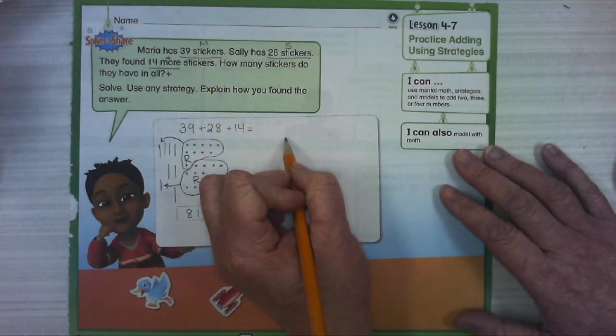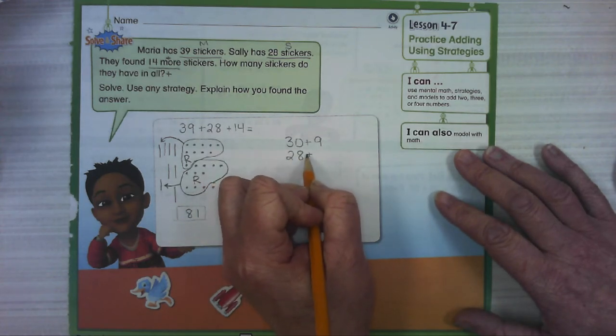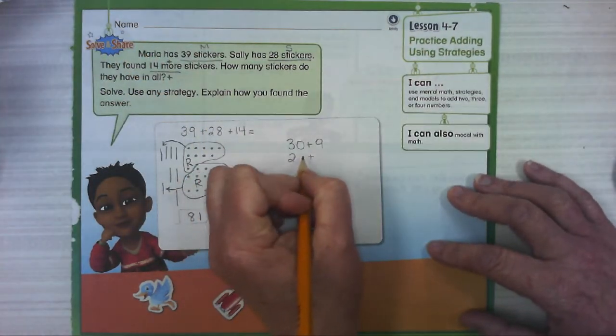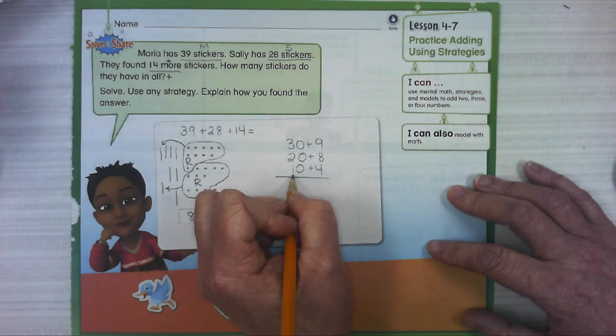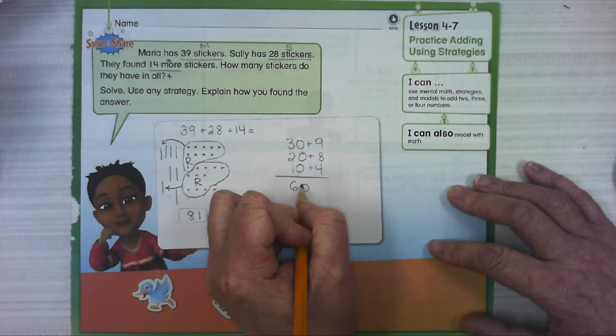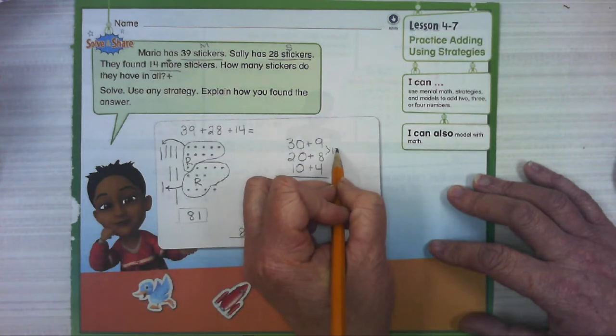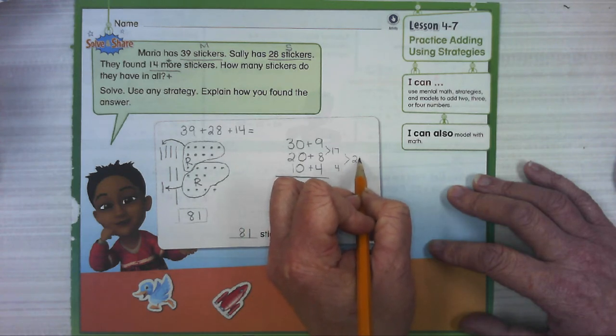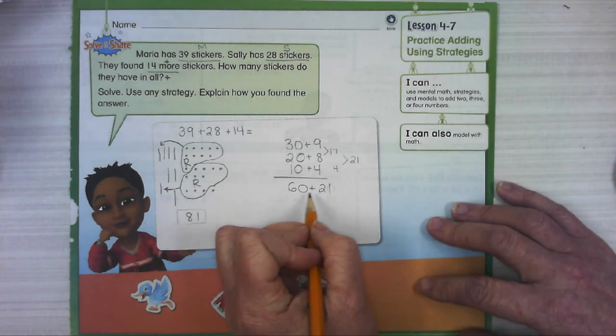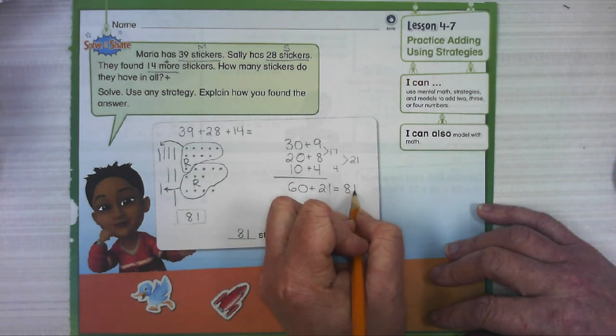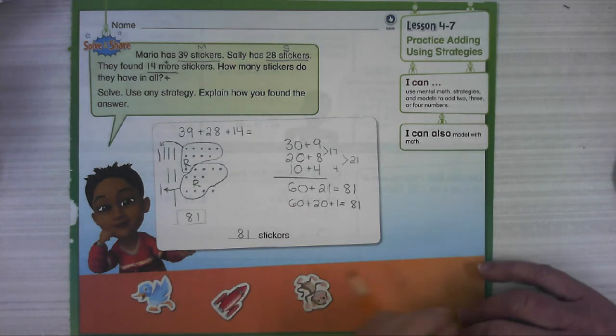I'm going to do the expanded form or partial sums way just to check and compare and to give you guys another example in case you did it this way. So 39 is 30 plus 9. 28 is 20 plus 8, and then 10 plus 4. Now I can do this pretty easily. 30 plus 20 plus 10 equals 60. Over here, this is where we've got to know those facts. 9 plus 8 is 17, and then if we add 4 more, that's 21.